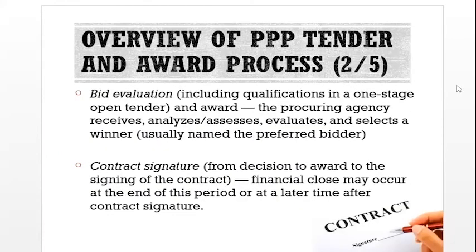Bid evaluation: including qualifications in a one-stage open tender. And award: the procuring agency receives, analyzes or assesses, evaluates, and selects a winner, usually named the preferred bidder.